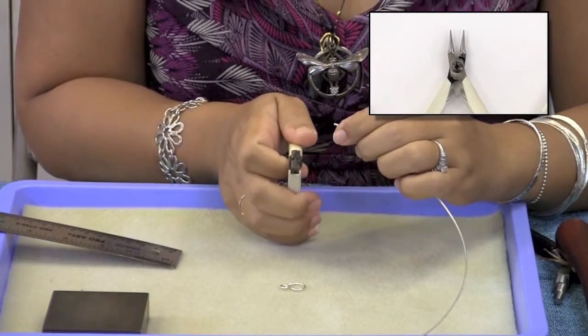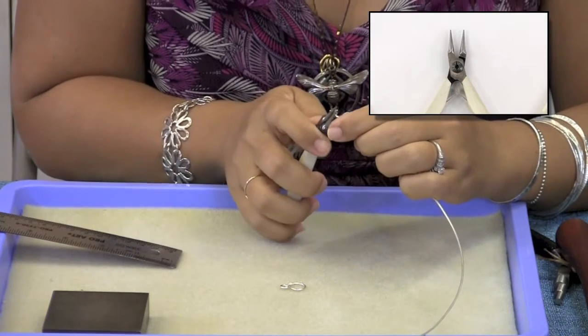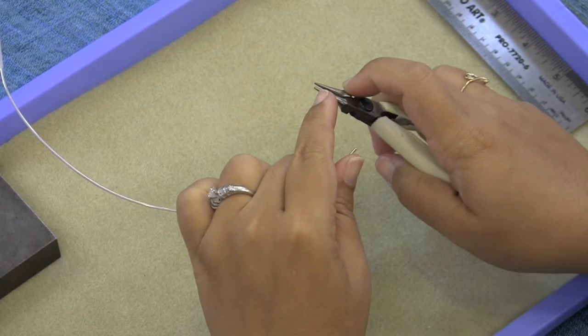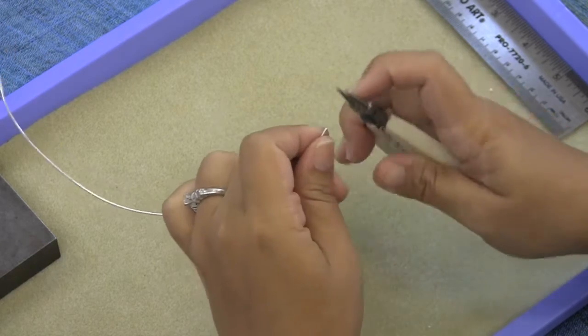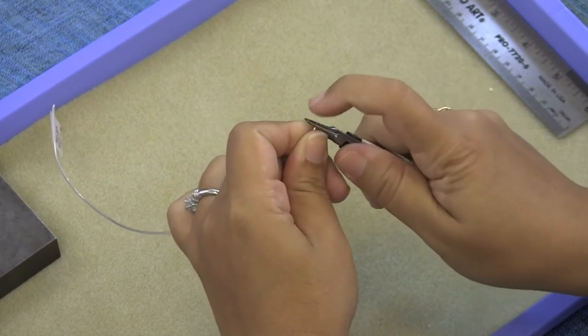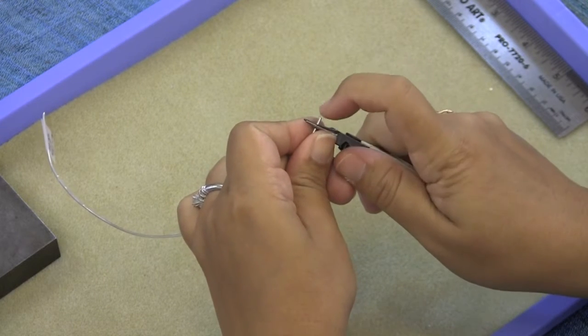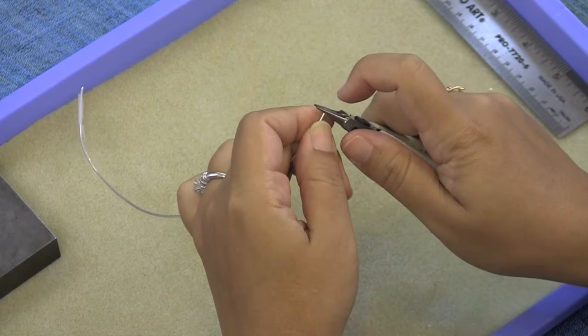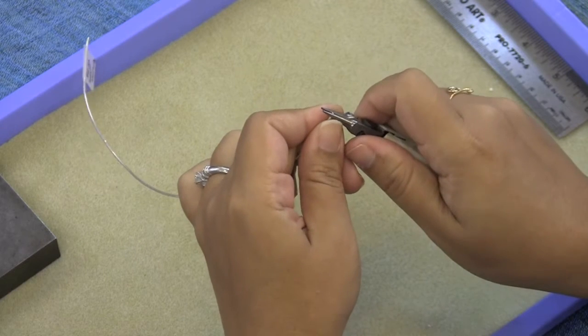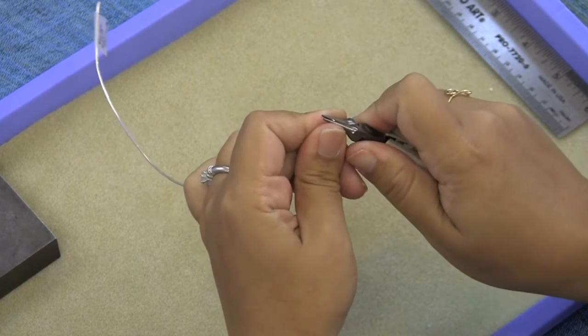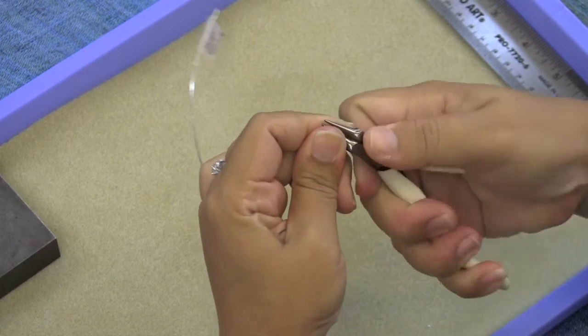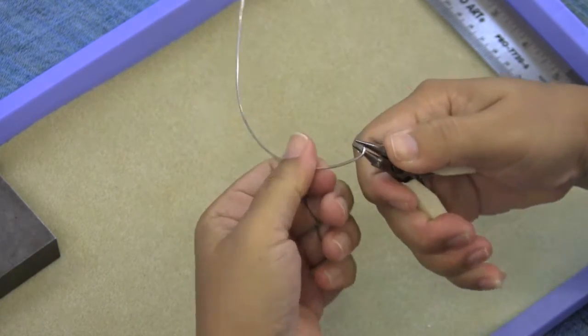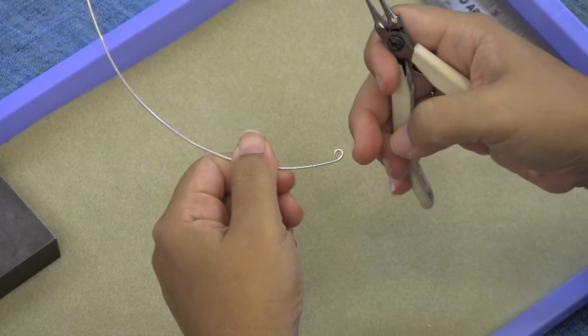We're going to get our round nose plier and I'm going to grab as close to the tip of the wire as I can between one third and halfway down the jaw of the plier. You want to make sure that this wire is not sticking out past the jaws of the plier because then you'll end up with a very flat spot on your spiral. I'm going to brace the wire with my thumb on my left hand and curl my wrist so that the palm faces me and I have my curl started here.